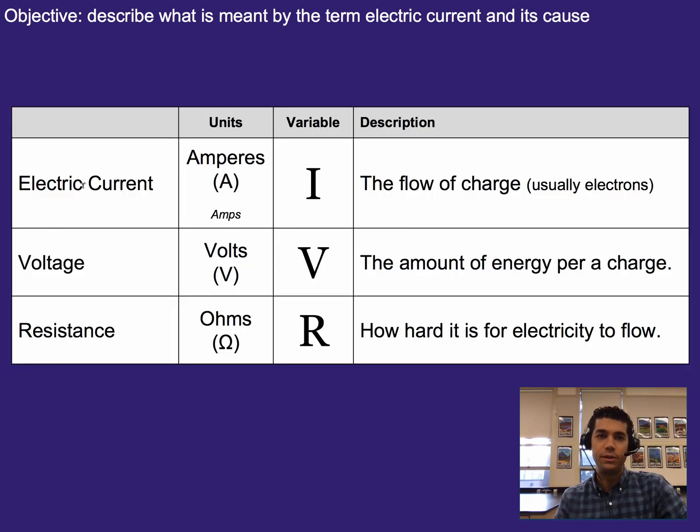Now, there are three things that we'll talk about when we talk about electric circuits. We already introduced one, which is electric current, and the variable for that is I. The units, or what we measure it in, are amps or amperes, and that is the flow of charge.